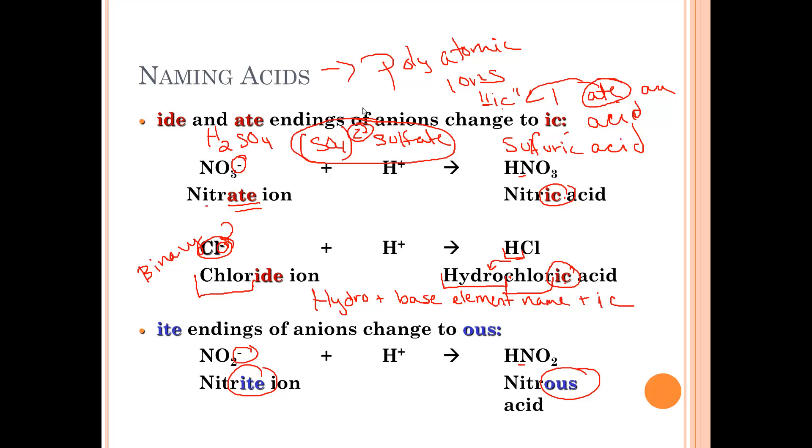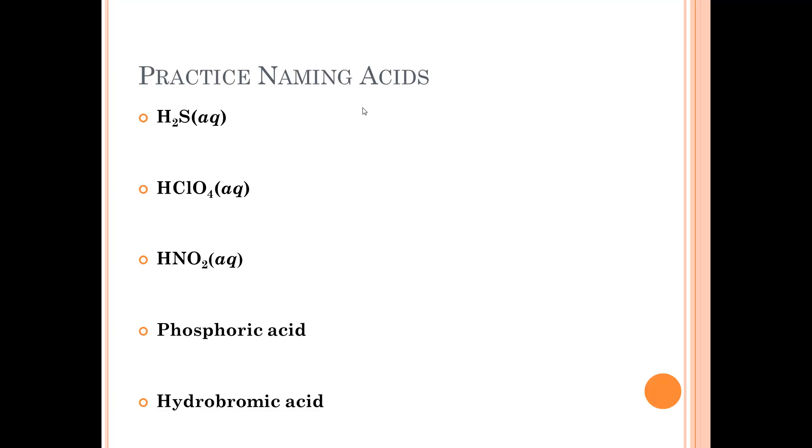So let's practice naming these. You have two elements. That means this is the naming for the right off the periodic table. So that becomes hydro plus the base word for sulfur, which is sulfur, with -ic.